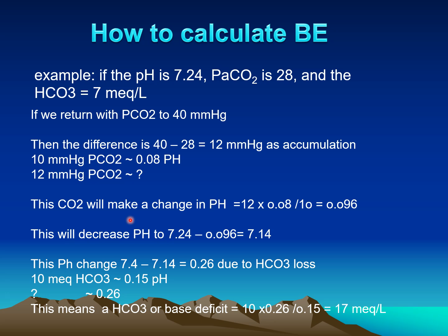This is an accumulation of carbon dioxide, which represents acidosis. The pH in this case is 7.24, so the pH will drop to 7.14. This 7.14 is the net result of the bicarbonate component only, since we have returned CO2 to 40. The change from normal (7.4 minus 7.14) gives 0.26 — this change in pH is due to bicarbonate loss.